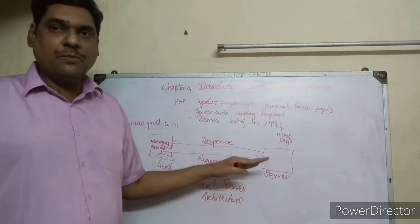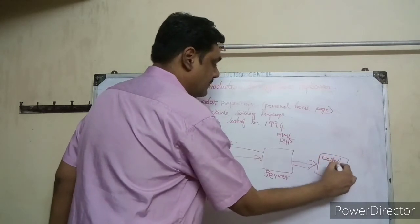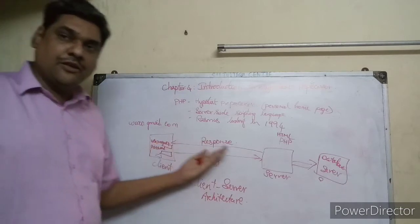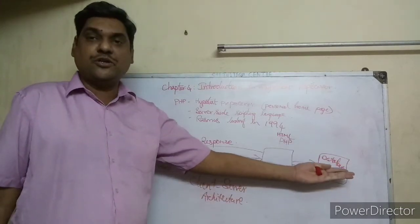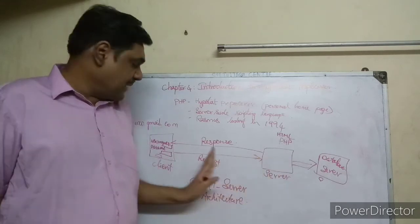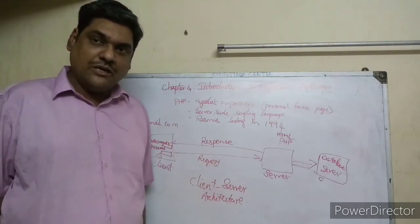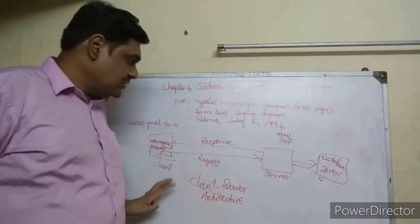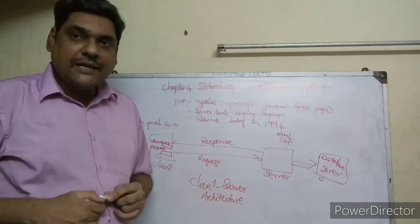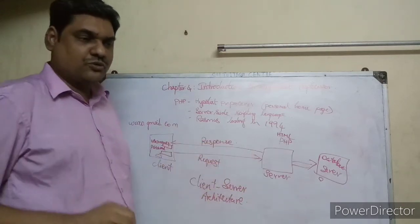All that data is stored in the database on the server. It is called the database server. The server connects the client's username and password with the database for database connection establishment. This is called multi-tier architecture - where there is client, server, and database server, it is called three-tier or multi-tier architecture.